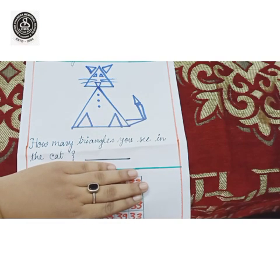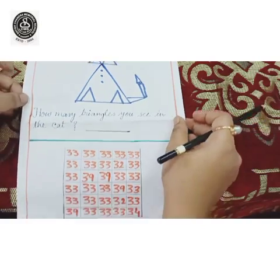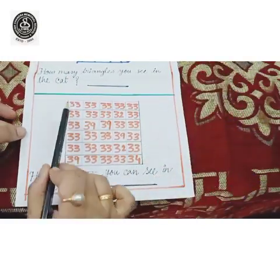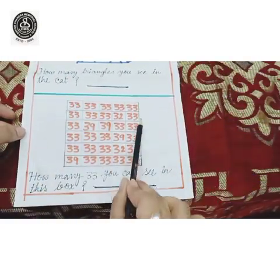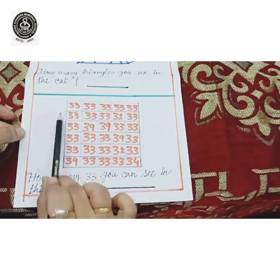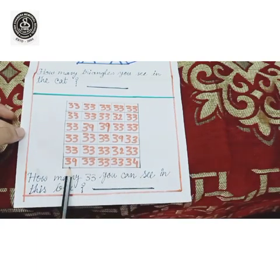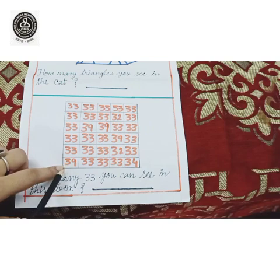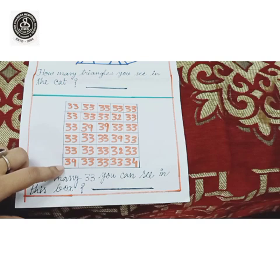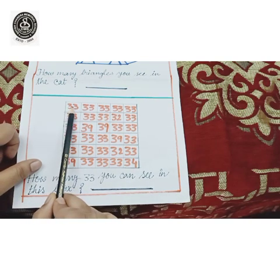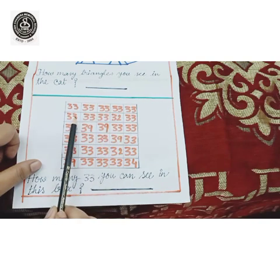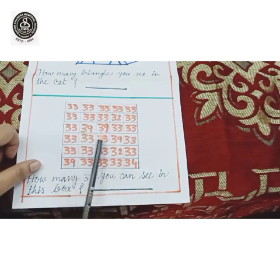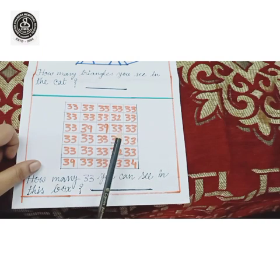You have one more activity in this sheet. See one big box here. This is your time to play with the numbers. I will tell you how to play. See, many many 3s are there — you can see 3s in the box, and some other numbers are also hidden here.